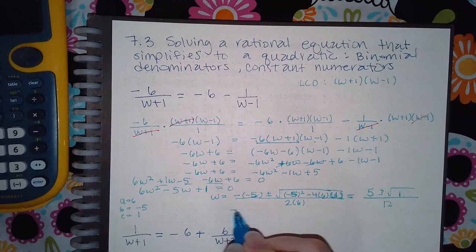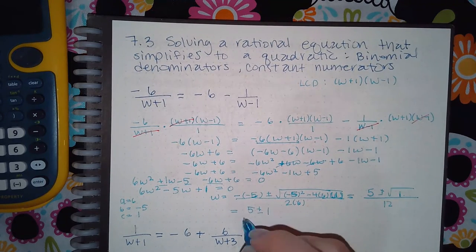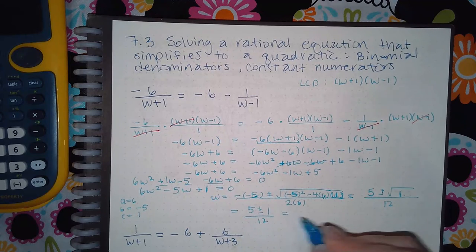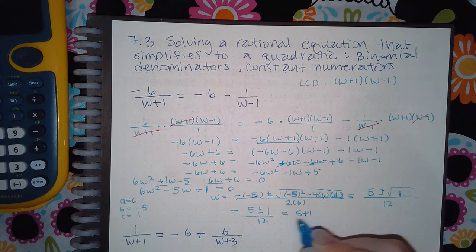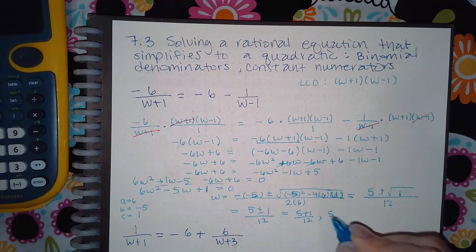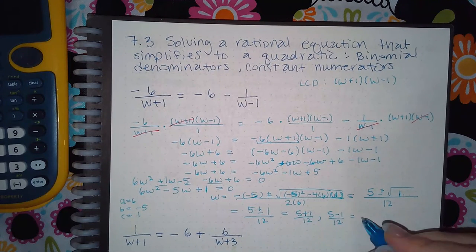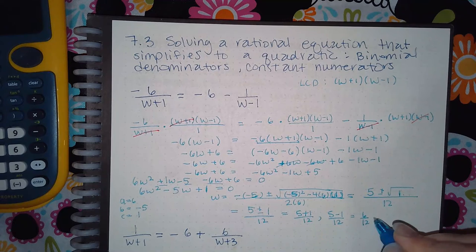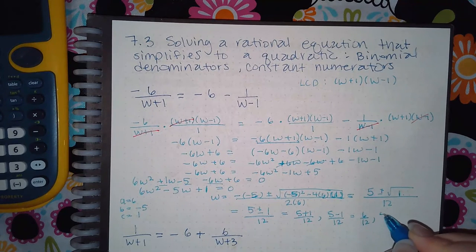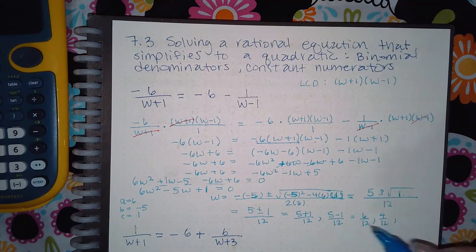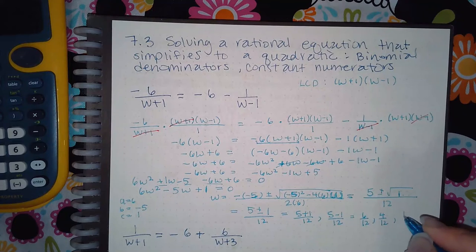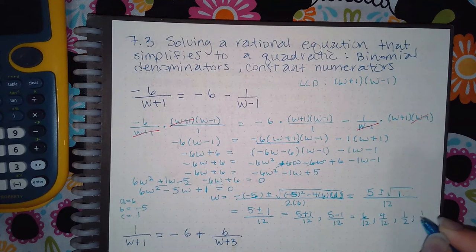So I get 5, and the square root of 1 is just 1. So I get two answers. I get 5 plus 1 over 12 and 5 minus 1 over 12. 5 plus 1 over 12 is 6 over 12, and 5 minus 1 over 12 is 4 over 12. Both of these can reduce. So I get 1 half and then I get 1 third.